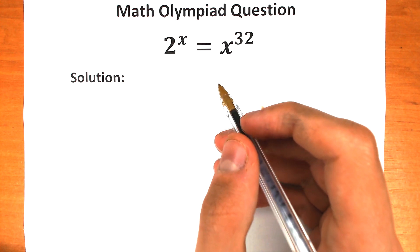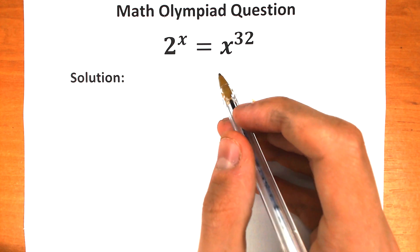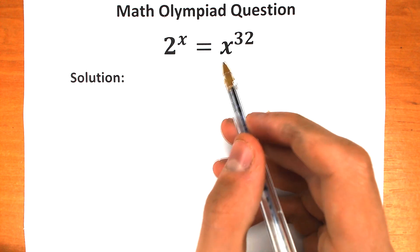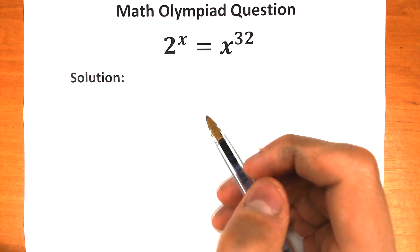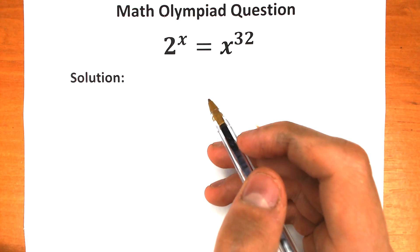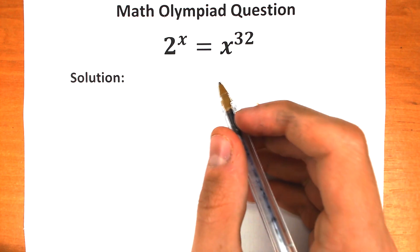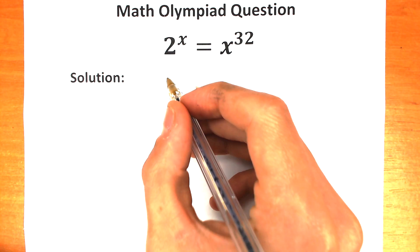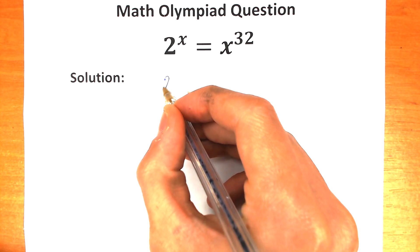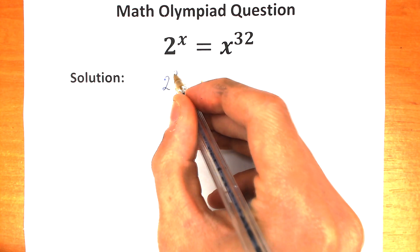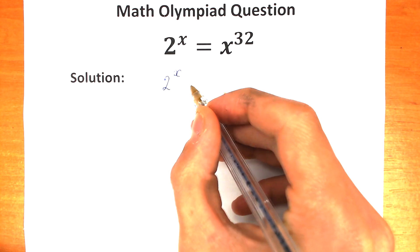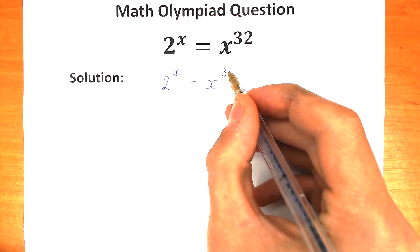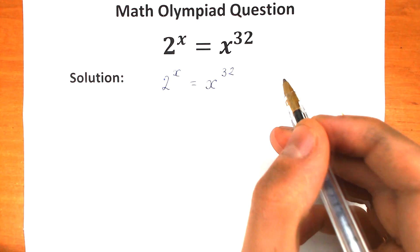Welcome to Higher Mathematics. Today we have a really interesting exponential equation: 2 to the x equal to x to the power 32. How can we solve it? I'm going to show you a really great trick.